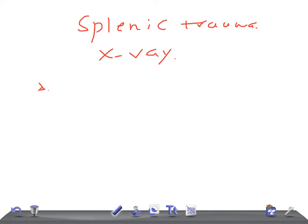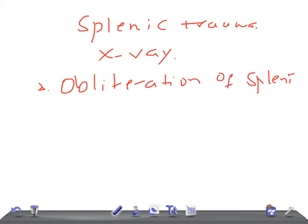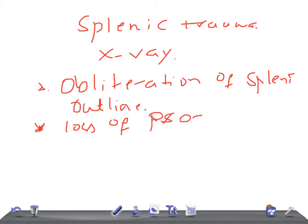So, signs of splenic rupture on plain X-ray. Number one, and very important, is obliteration of the splenic outline — this is the best way to diagnose splenic trauma on plain X-ray. Also look for loss of the psoas outline. I can't put images here due to copyright, but just Google 'obliteration of splenic outline' to see examples.